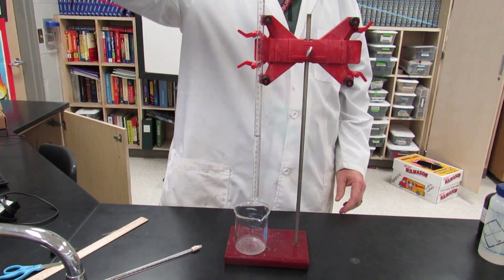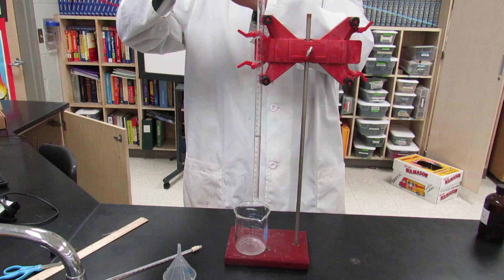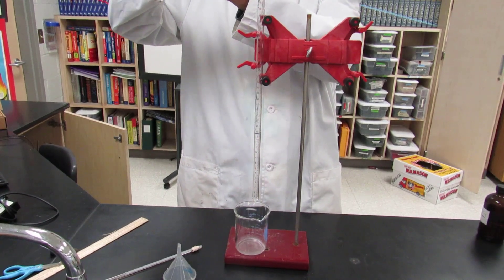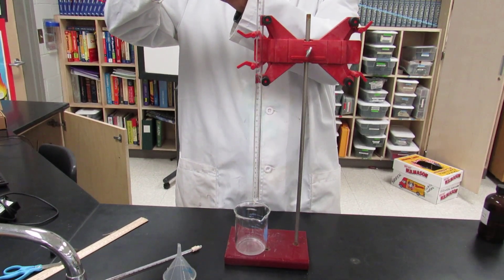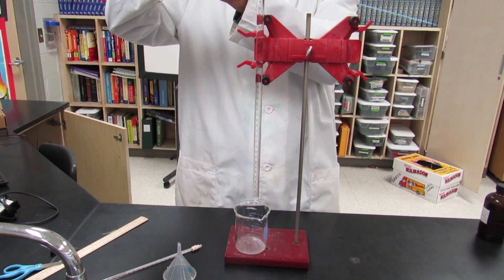Next, you want to put deionized water into the eudiometer. Use your squirt bottle and fill the eudiometer with water. Do this very slowly so that you don't mix the hydrochloric acid.